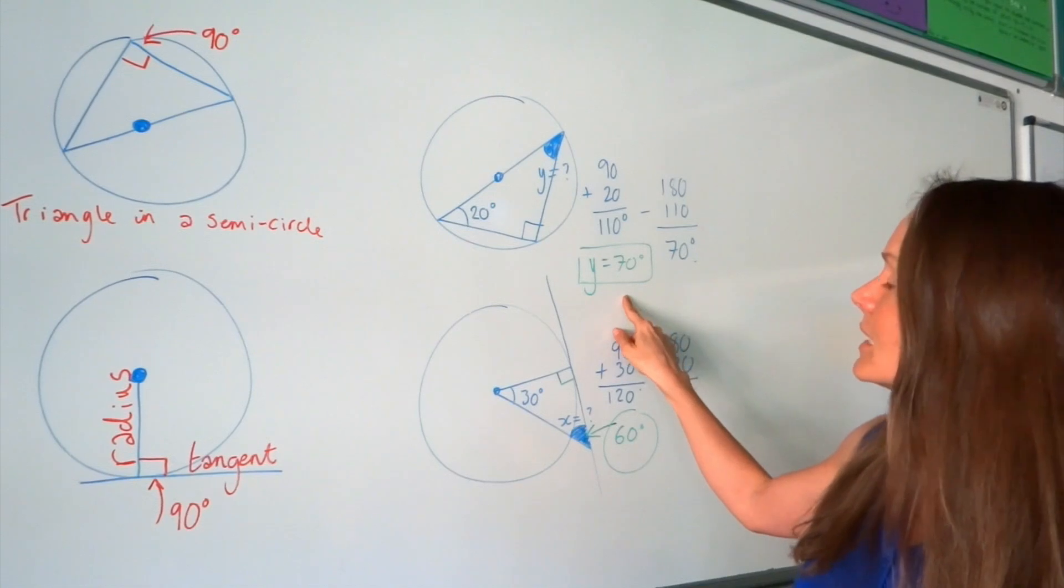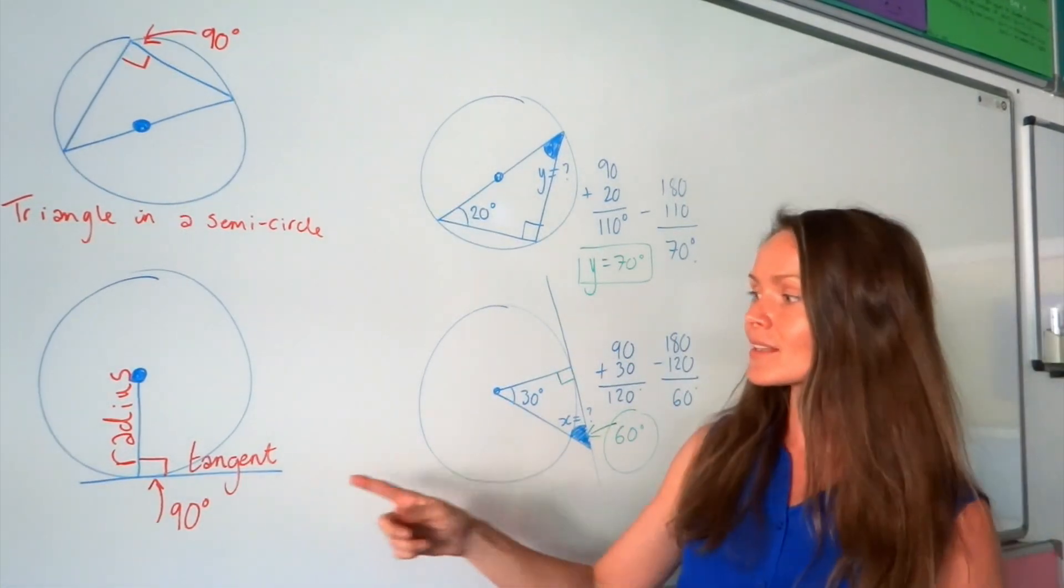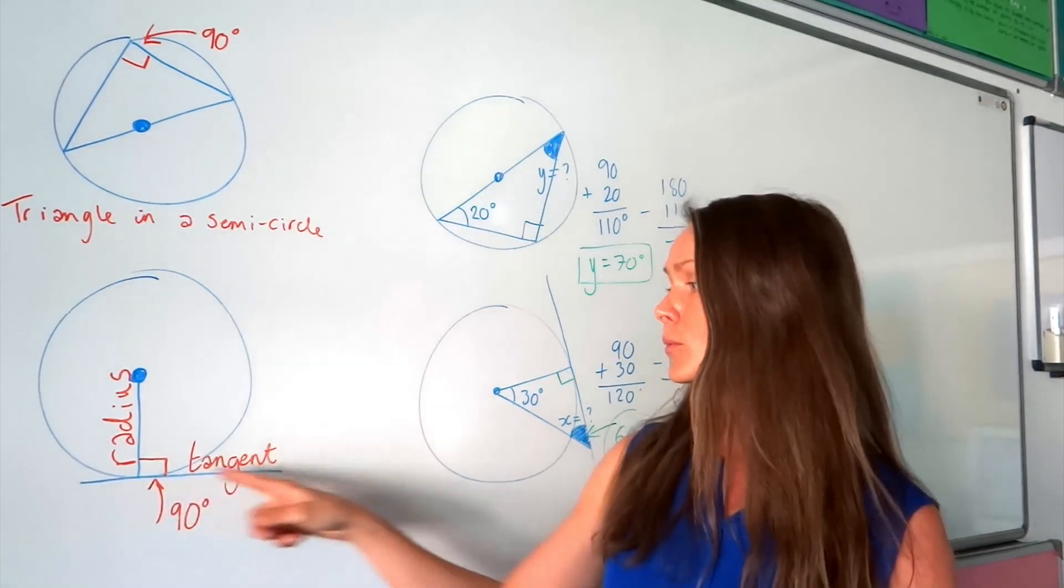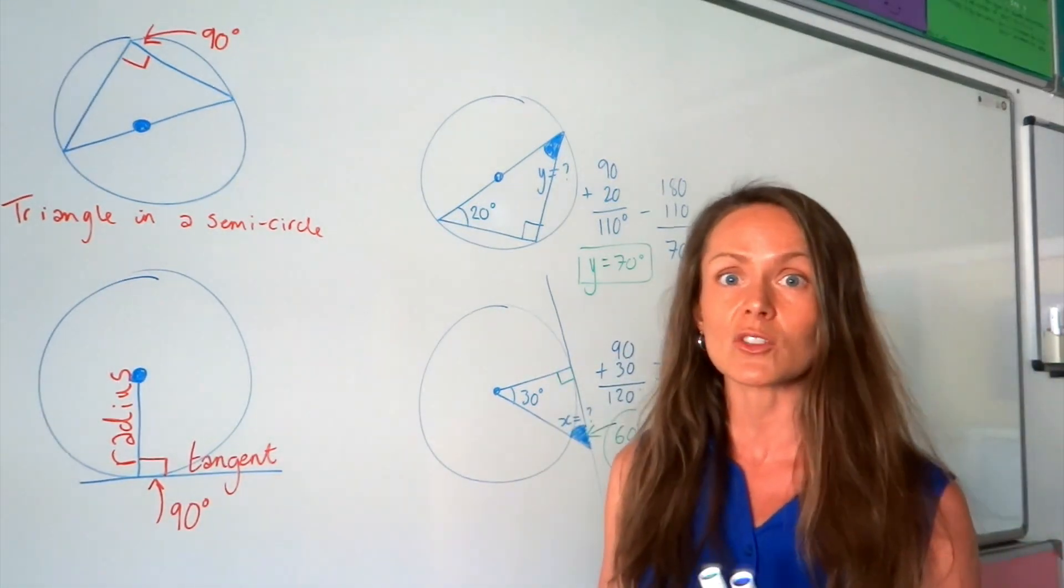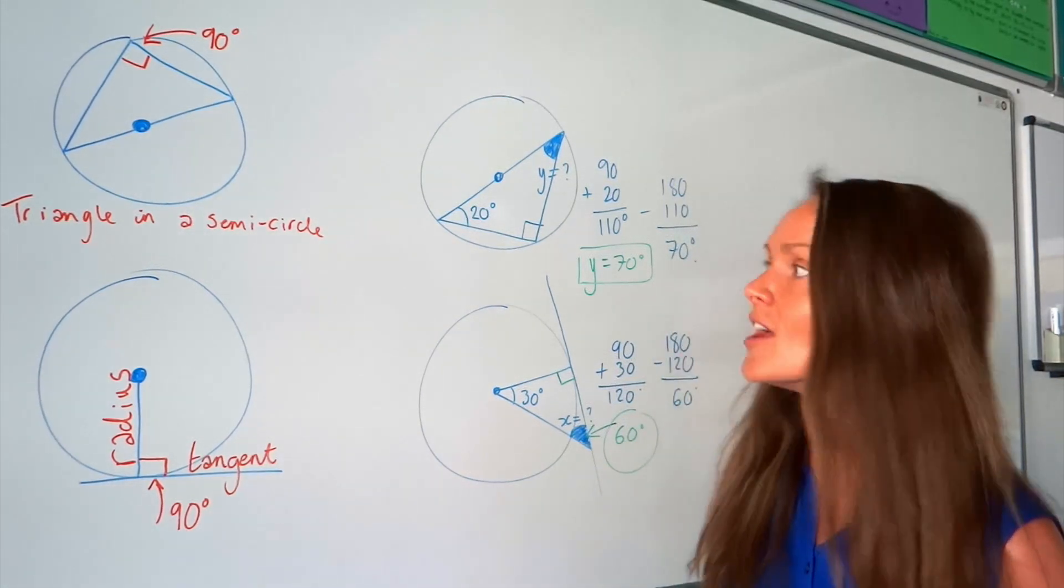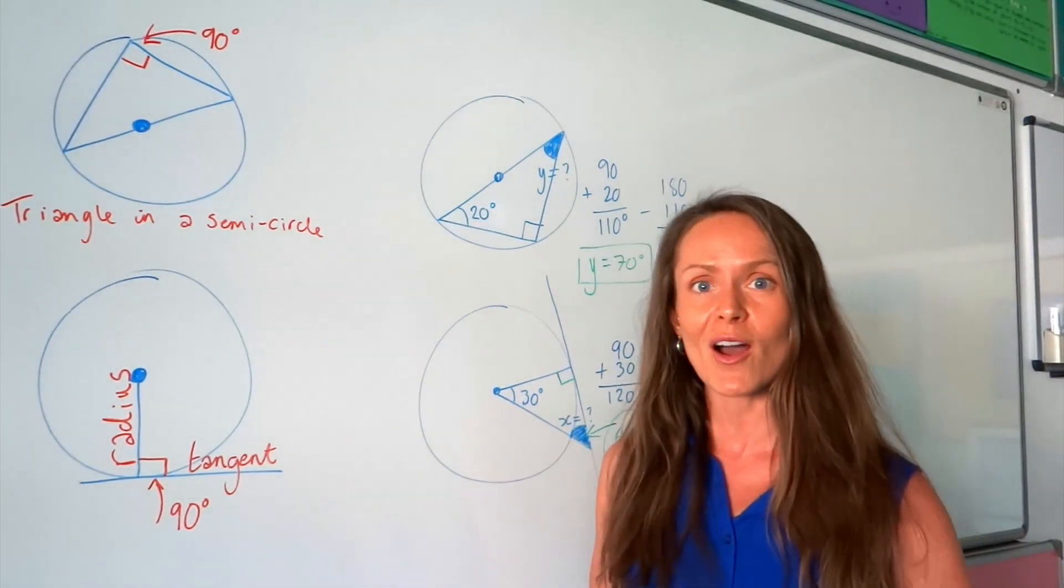And just like in the last one here, if you're asked to explain, then you would need to explain the angle the tangent and the radius make with each other is always 90 degrees. And angles in a triangle add up to 180. So, there are a couple of easy examples. I'm going to have a go at some harder ones just now.